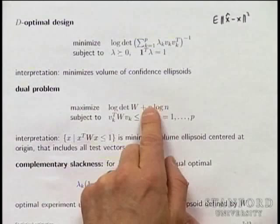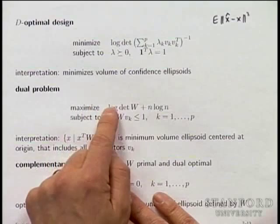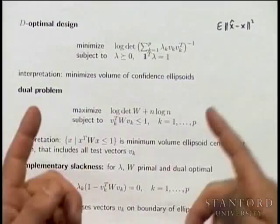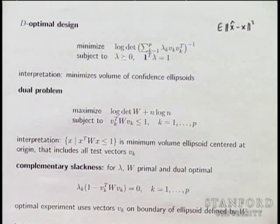This dual problem has a very simple interpretation. Maximizing log det W — or minimizing log det W-inverse — is the log of the volume of an ellipsoid up to constants. The constraint V_k^T W^{-1} V_k ≤ 1 means this is the problem of computing the minimum volume ellipsoid that covers the points V_k.